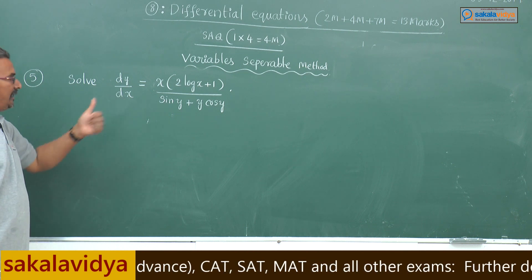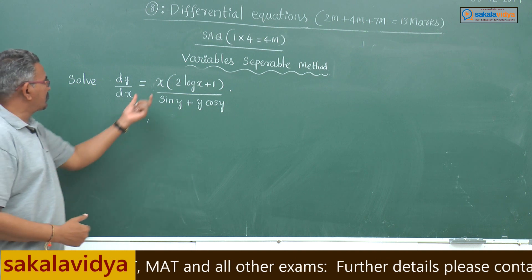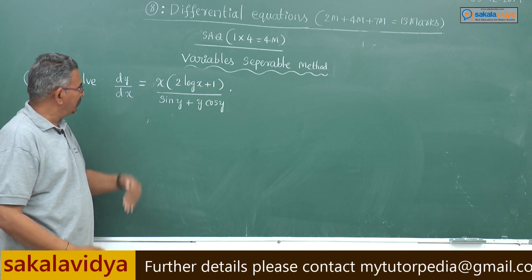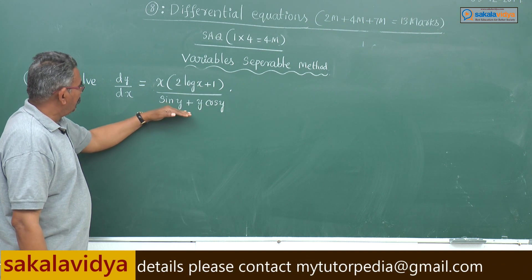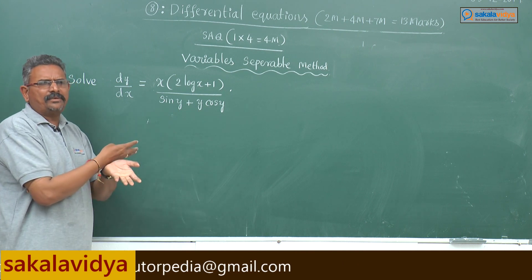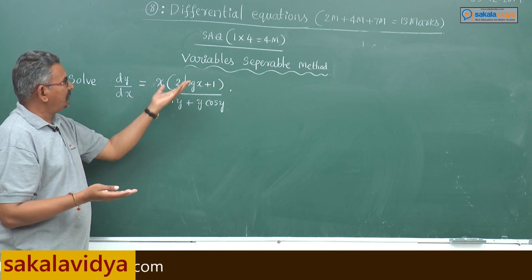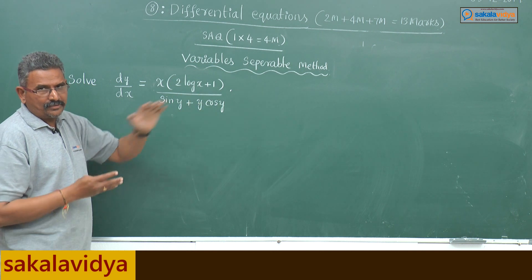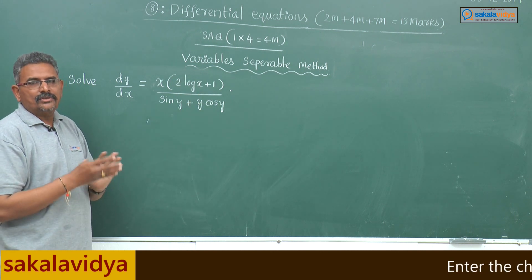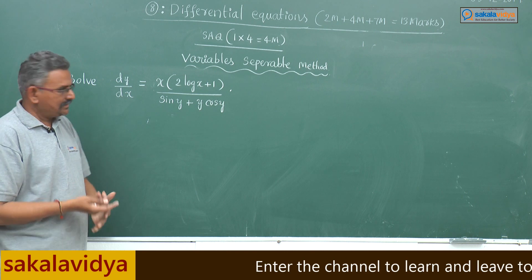Solve: dy/dx equals x times (2 log x plus 1) upon (sin y plus y cos y). Just cross multiply and integrate it — then the variables separable method can be applied. Variables will be separated so that we can integrate.